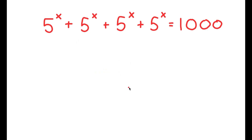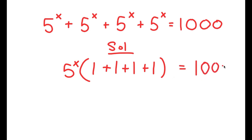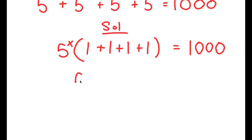In this problem I have 5 to the power of x plus 5 to the power of x plus 5 to the power of x plus 5 to the power of x is equal to 1000. I'm going to start by factoring out 5 to the power of x from the left-hand side, because we have four of the same terms and the easiest way to solve this is to factor them out. So I get 5 to the power of x times 4 is equal to 1000.